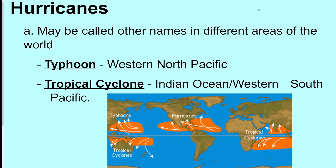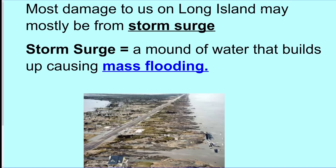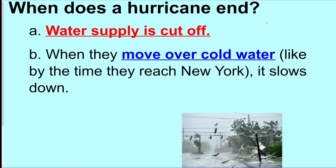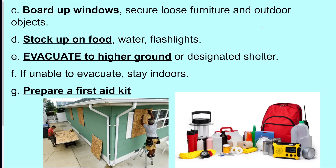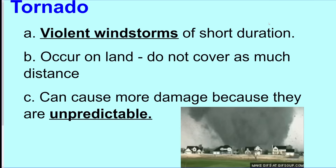For hurricanes: storm surge is the worst part — it causes major flooding. Hurricanes end when they move over cold water or over land. To prepare: board up windows, stock up on food, evacuate to higher ground, and prepare a first aid kit. You normally have a couple of days to prepare.